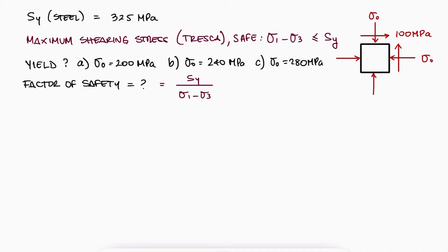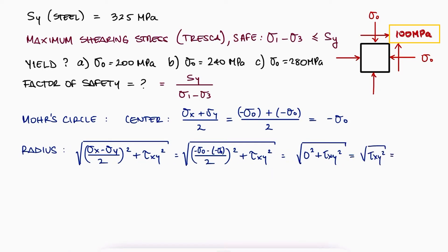For all three cases A, B and C, the center of our Mohr circle will be at minus σ0. And again, for all three cases, the radius will be equal to the shearing stress of 100 MPa.